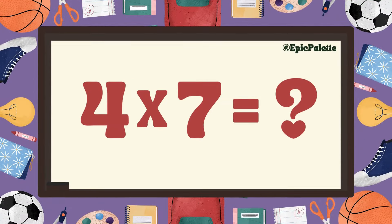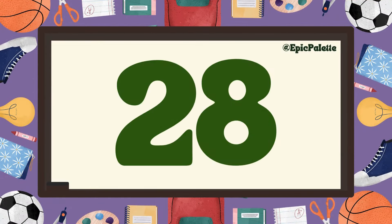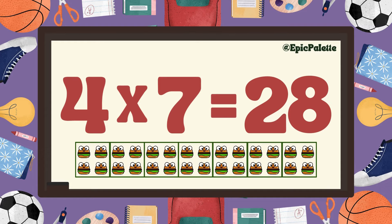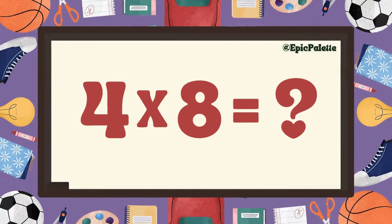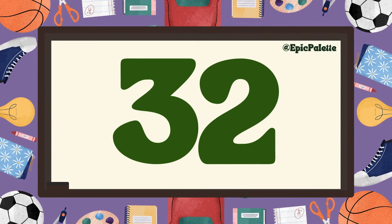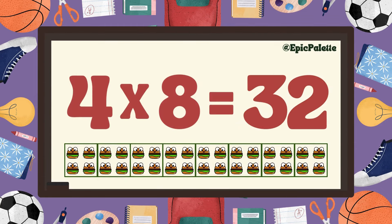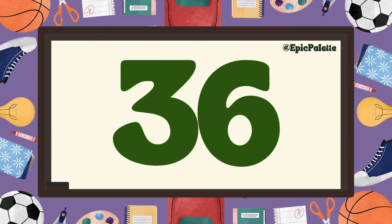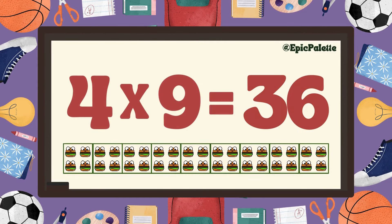4 times 7 equals... 28. That's right. 4 times 7 equals 28. Fantastic. You're doing great. 4 times 8 equals... 32. That's right. 4 times 8 equals 32. Perfect. 4 times 9 equals... 36. That's right. 4 times 9 equals 36. Great job.